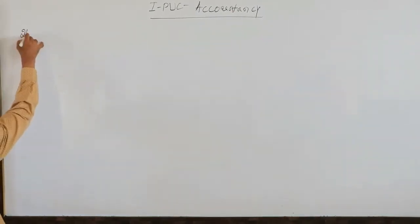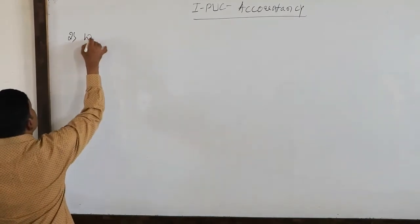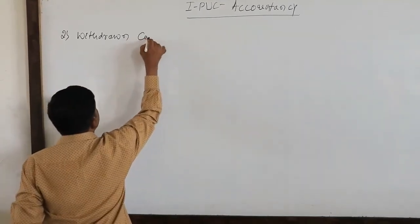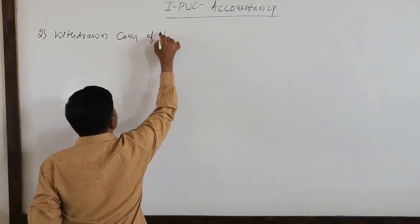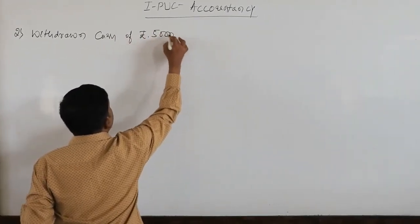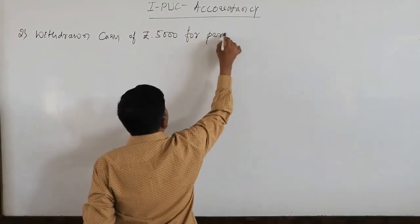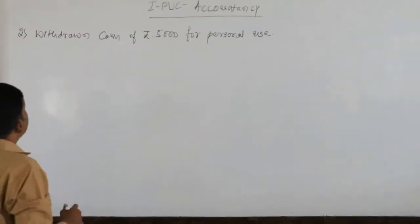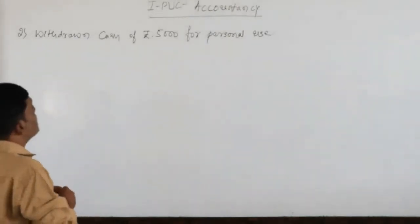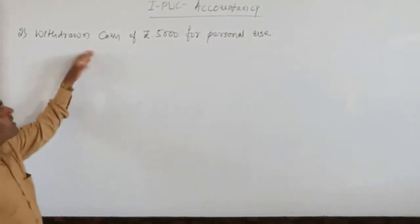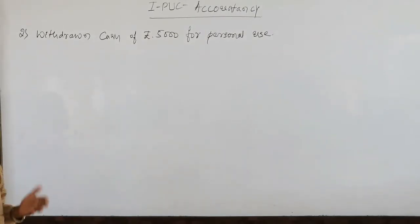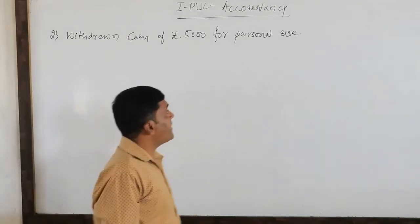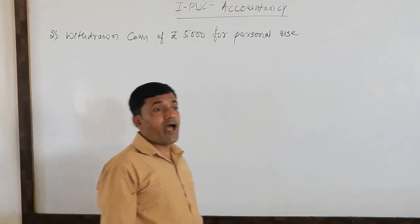Example number two: the owner withdraws cash of rupees 5,000 for personal use, also called domestic use. By observing this rough book entry, please concentrate — the owner has withdrawn cash of rupees 5,000 from the business for his personal use.